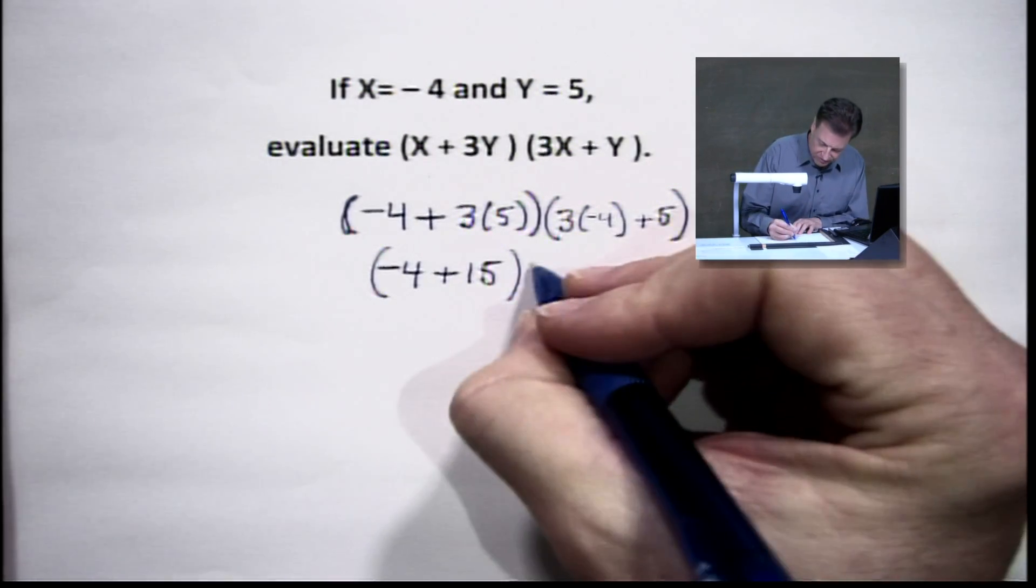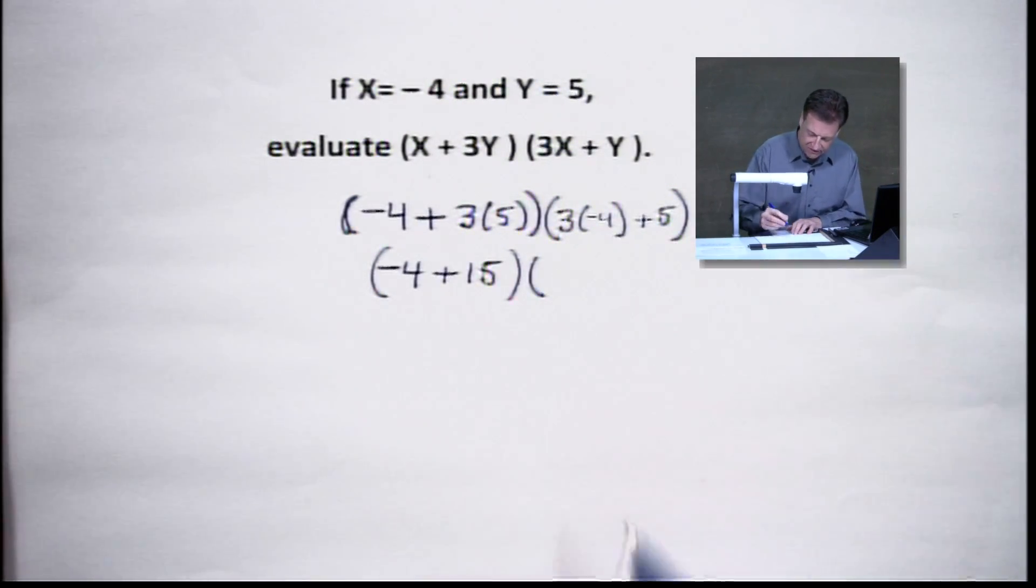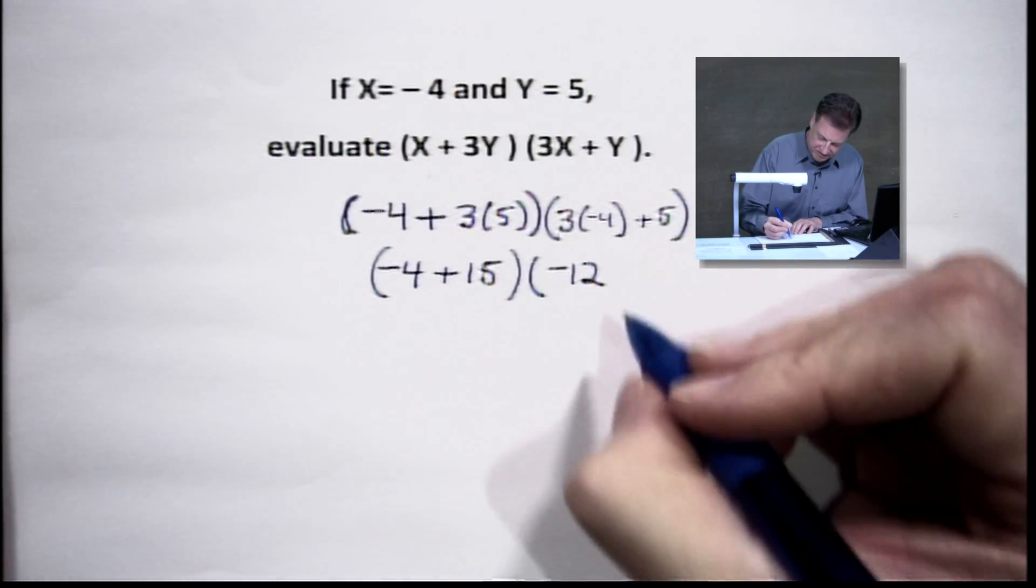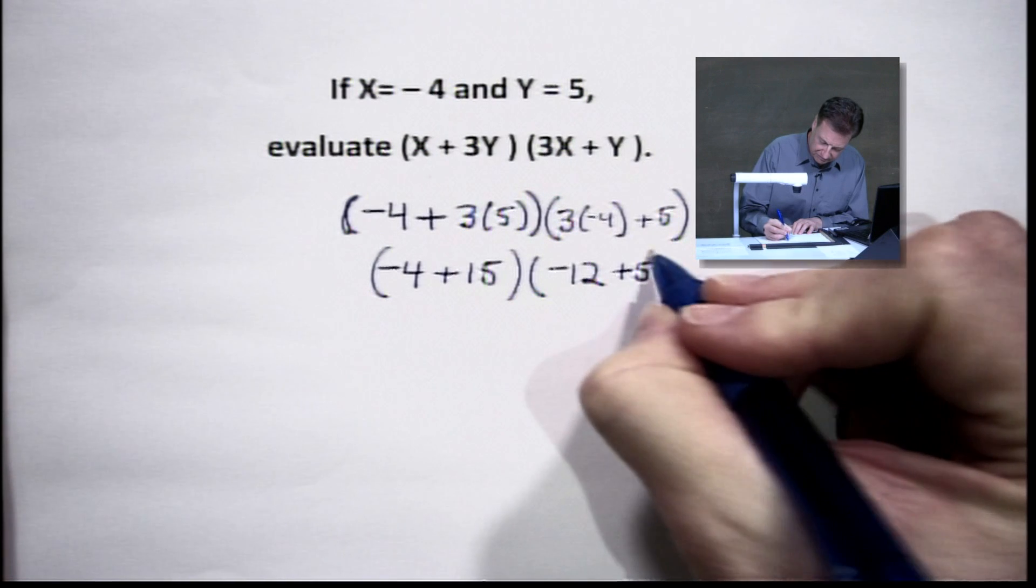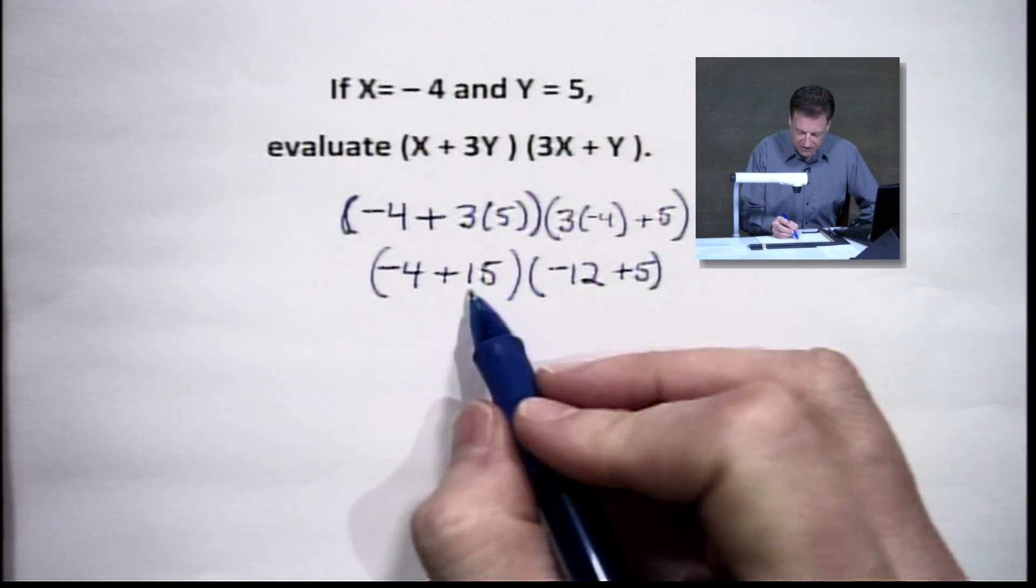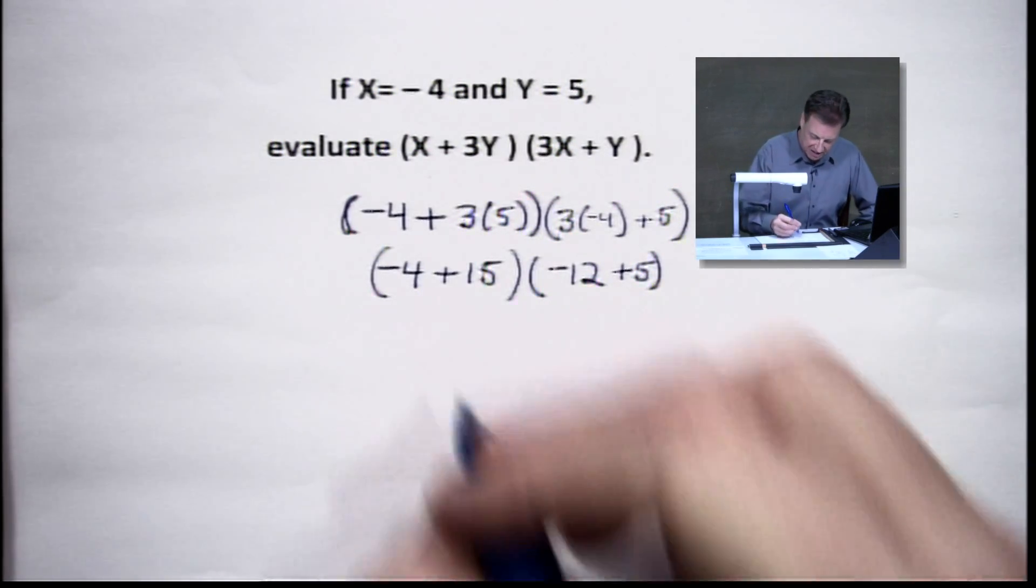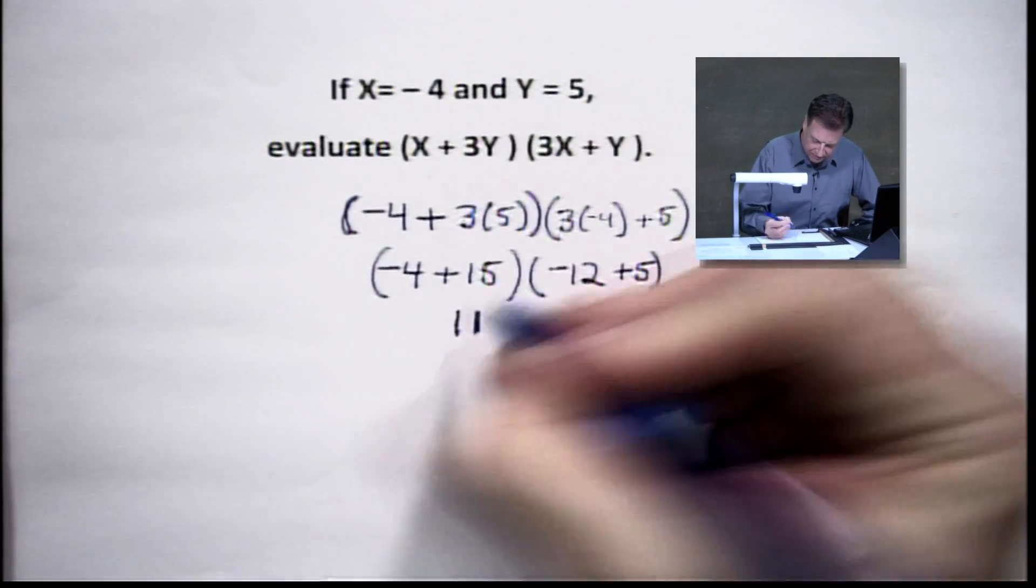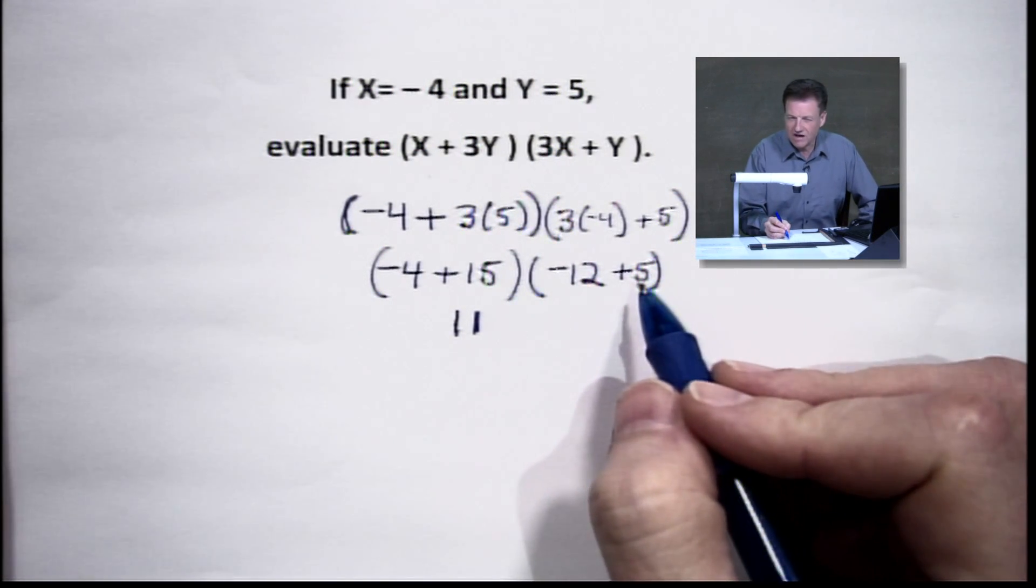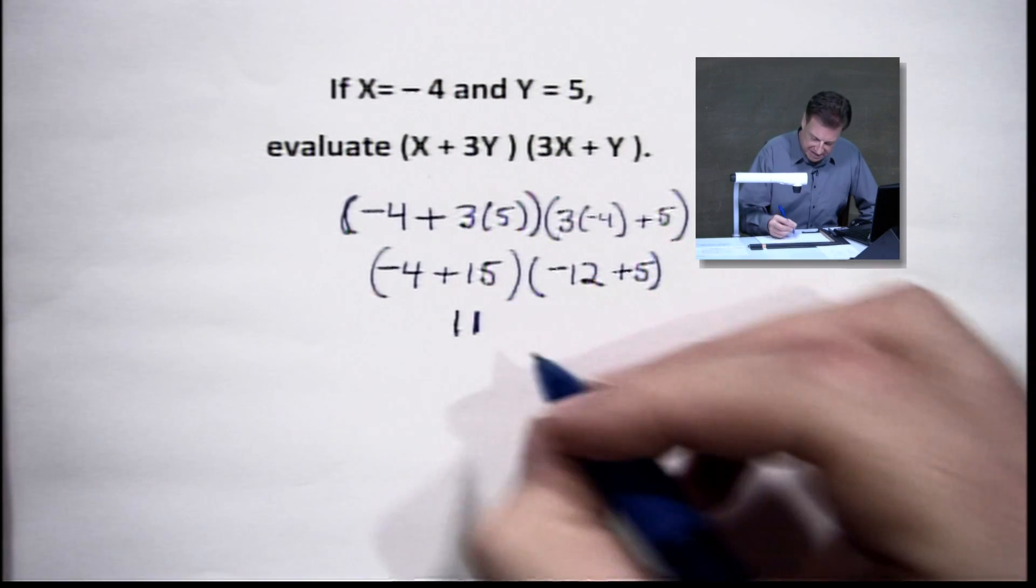Let's work in our other parentheses. This is 3 times negative 4. We get a negative 12, and we're going to add 5 to that. Looks a lot easier, doesn't it, folks? Let's continue to work inside those parentheses. I've got a negative 4 plus 15. It's going to pick up an 11. Over here, I've got a negative 12 plus 5, which is going to give me a negative 7.